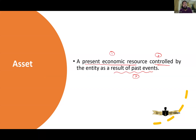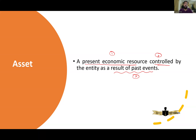Any item that produces economic benefit is known as an economic resource. And if it's an economic resource which is controlled by the entity, that is the definition of an asset. The third element in the definition of an asset is past event — which simply means the purchase of an asset. So an asset is a present economic resource controlled by the entity as a result of a past event.